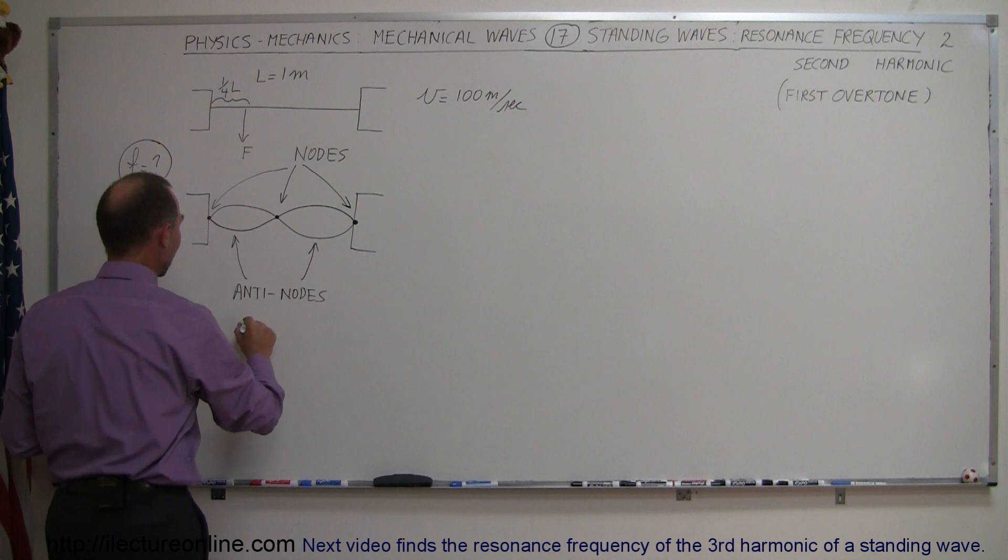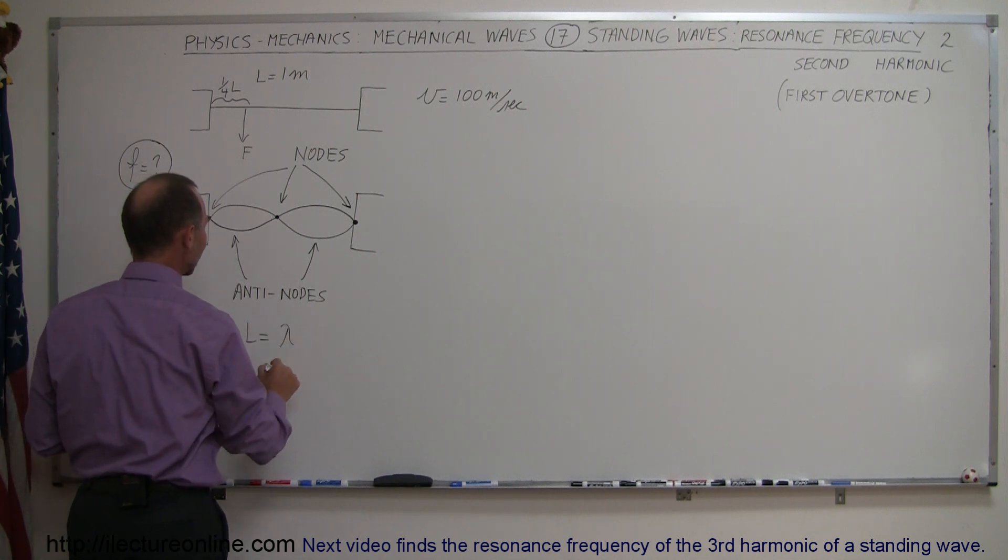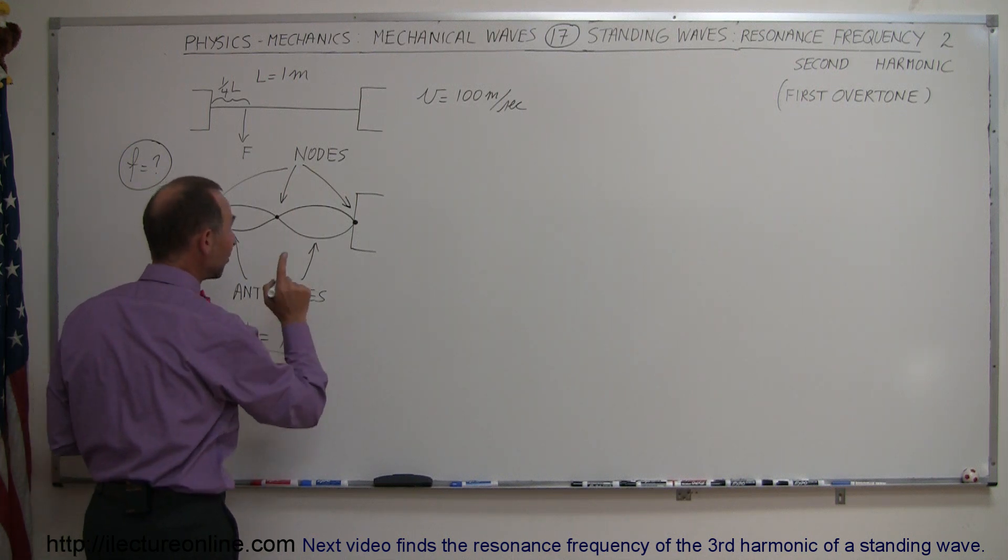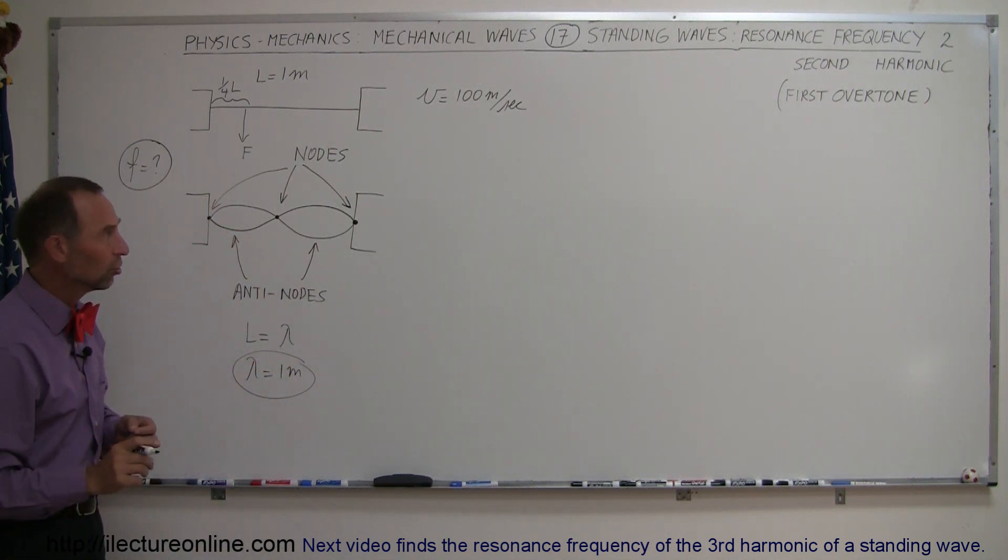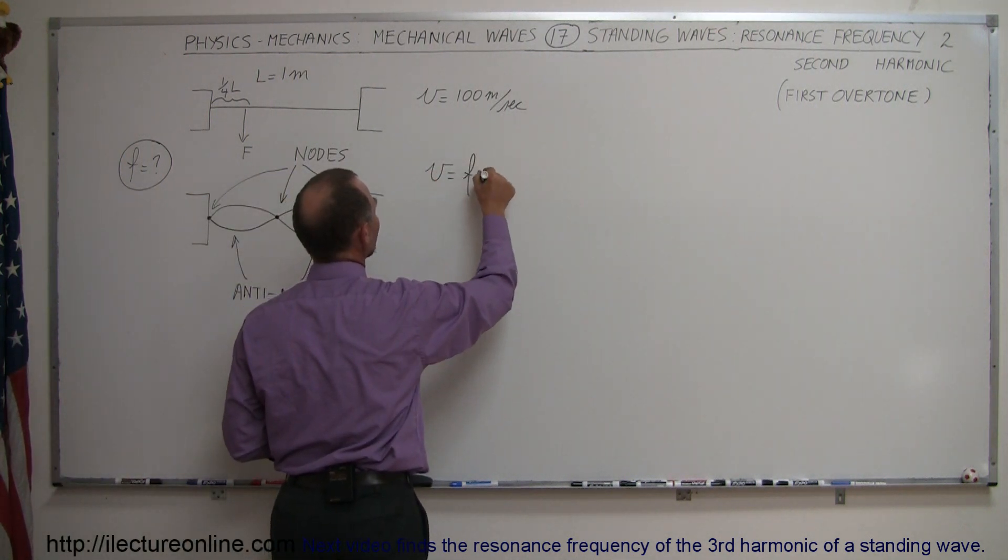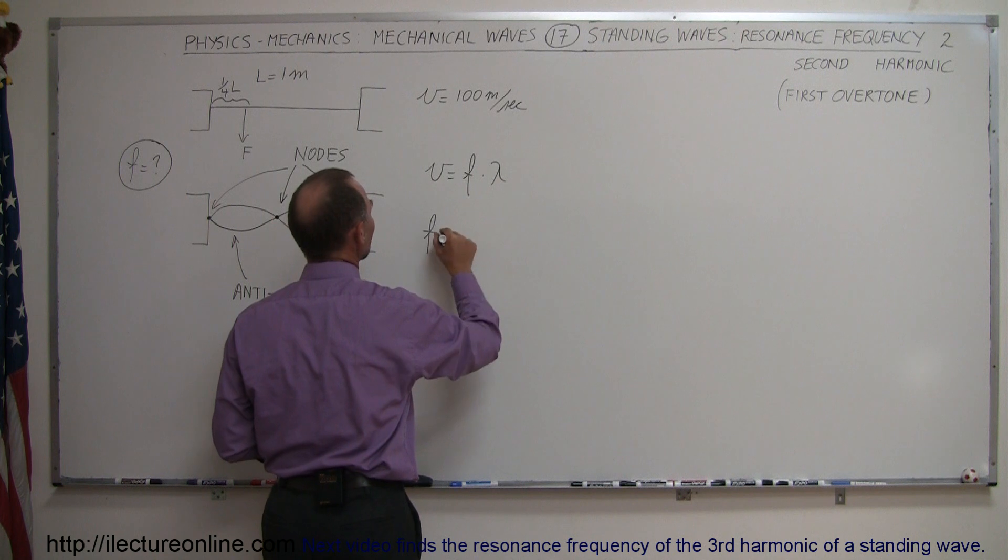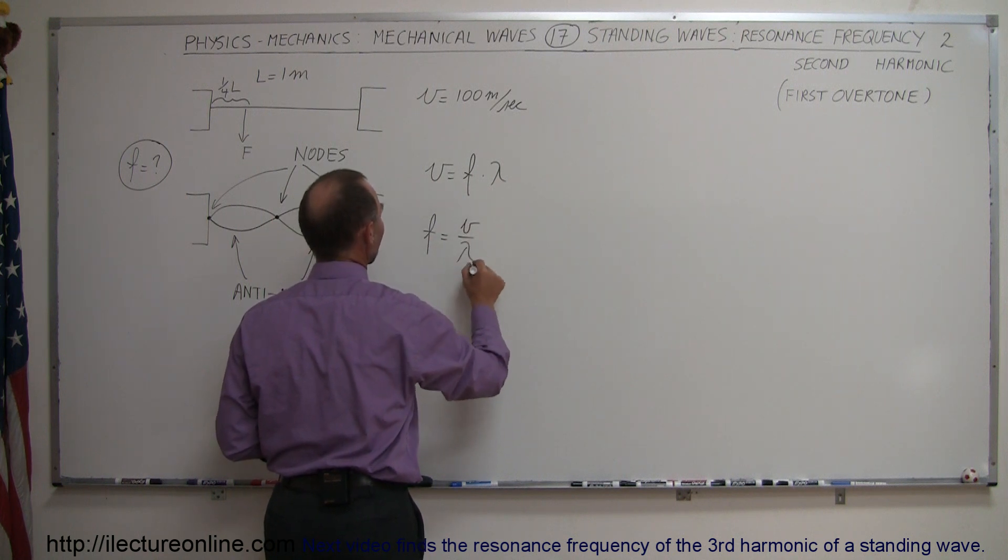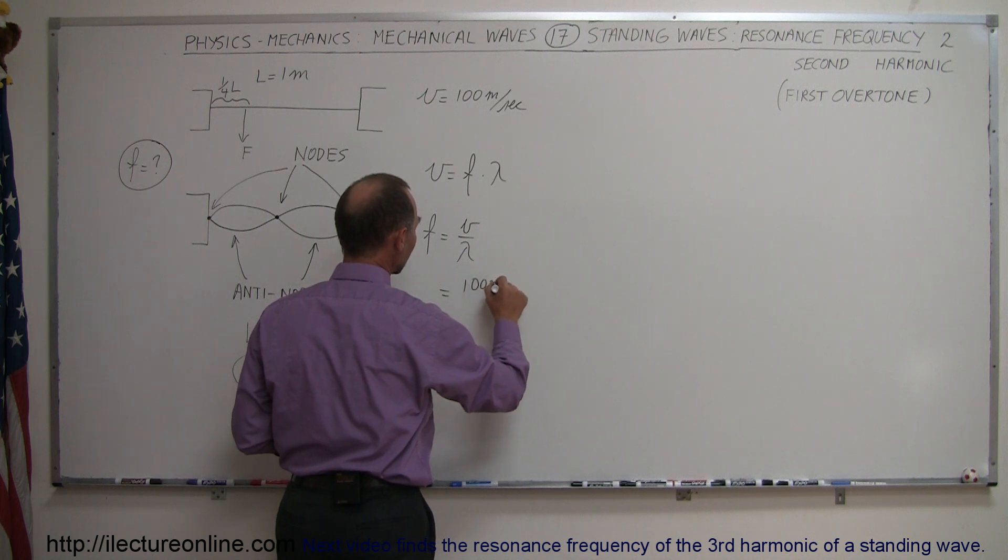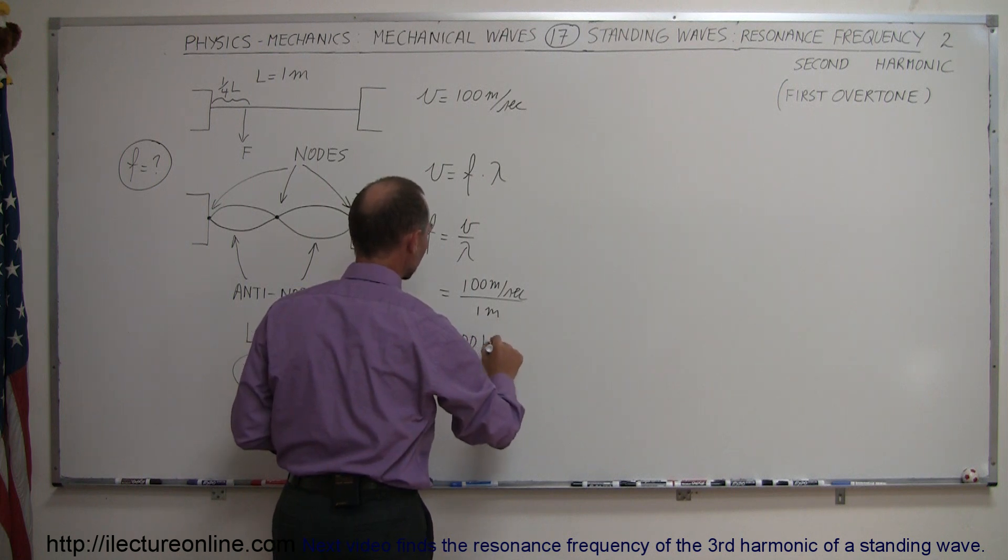Notice in this case that the length is equal to the wavelength. And so, since the length was 1 meter, we know then that the wavelength is 1 meter as well. The velocity hasn't changed because the tension didn't change. So, if we then say that the velocity is equal to the frequency times the wavelength, or the frequency is equal to the velocity divided by the wavelength, so in this case it's equal to 100 meters per second divided by 1 meter, which is equal to 100 hertz.